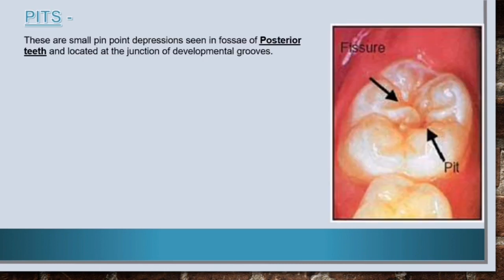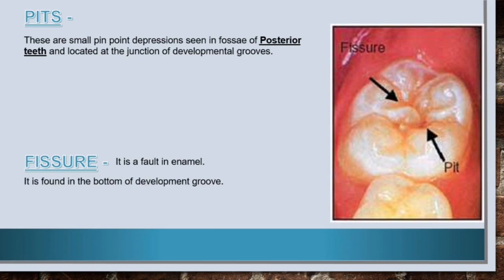Now let's know about pits and fissures. Pits are small pinpoint depressions seen in fossae of posterior teeth, and are located at the junction of developmental grooves. A fissure is a fault in enamel found in the bottom of a developmental groove, and results from incomplete union of primary lobes.